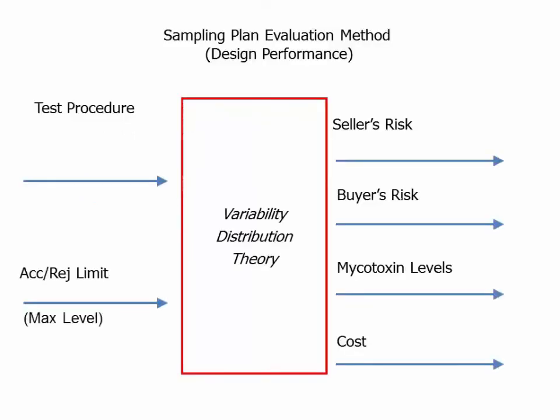All of this information can go into the development of a sampling plan: what kind of test procedure will be used, and what acceptance or rejection limit is set. The outputs of that are a certain seller's risk, a certain buyer's risk, the levels of mycotoxins that you can expect in the product, and the costs involved with running that program.